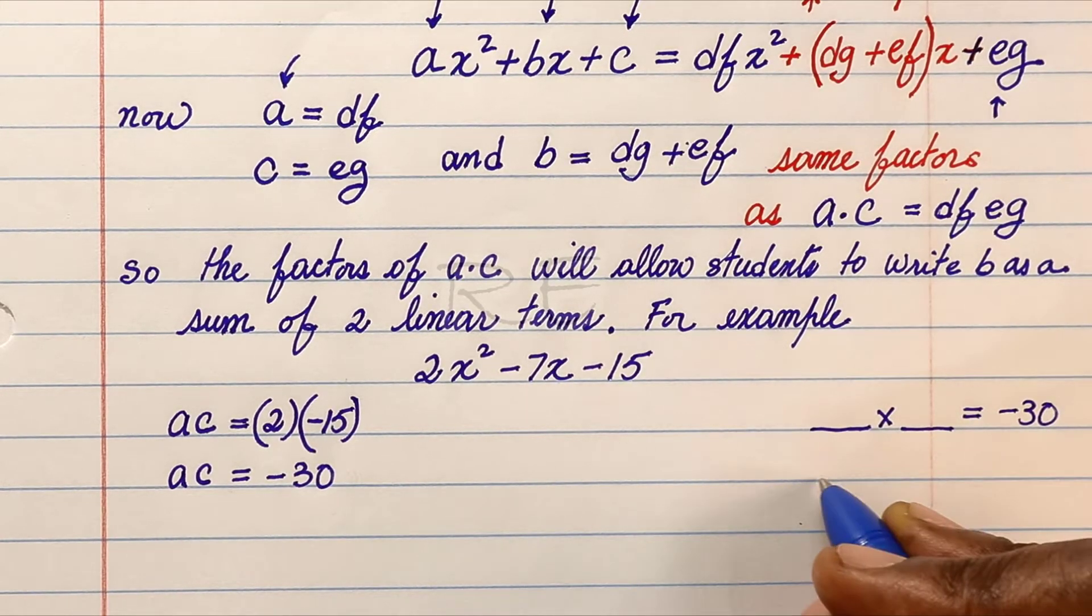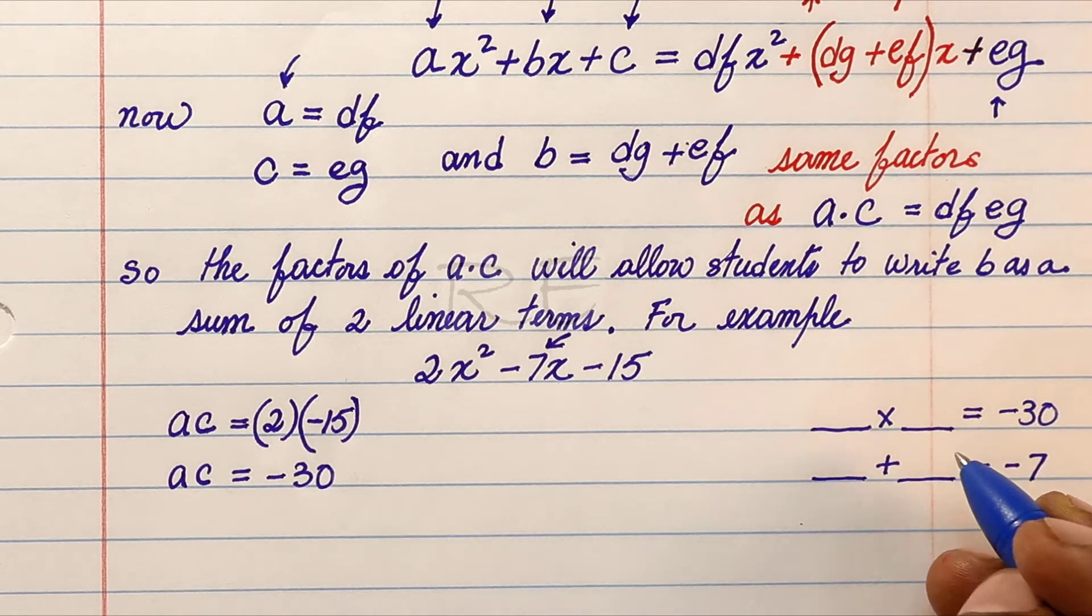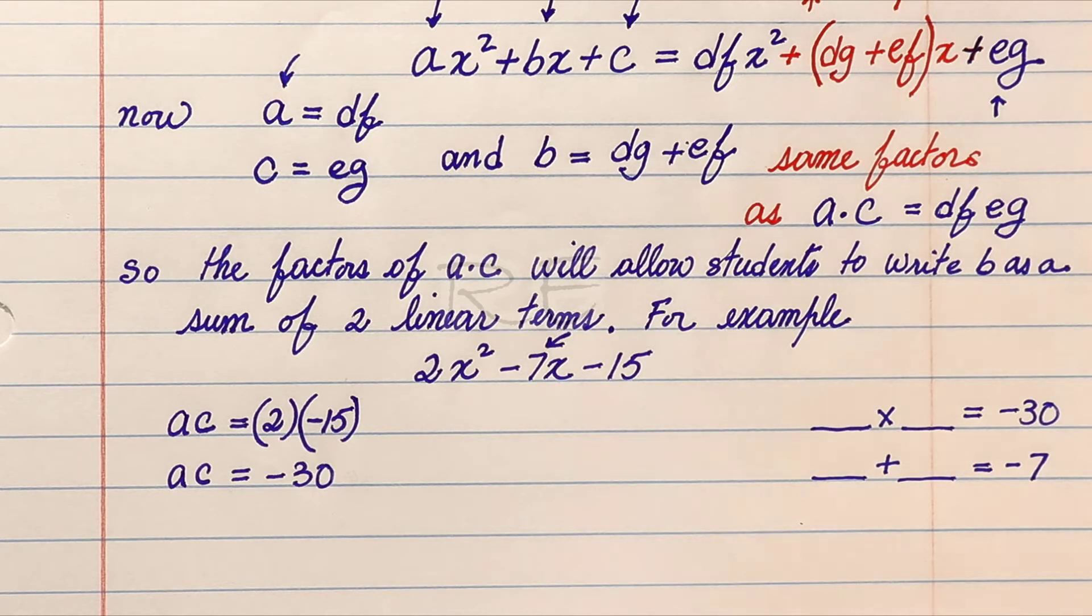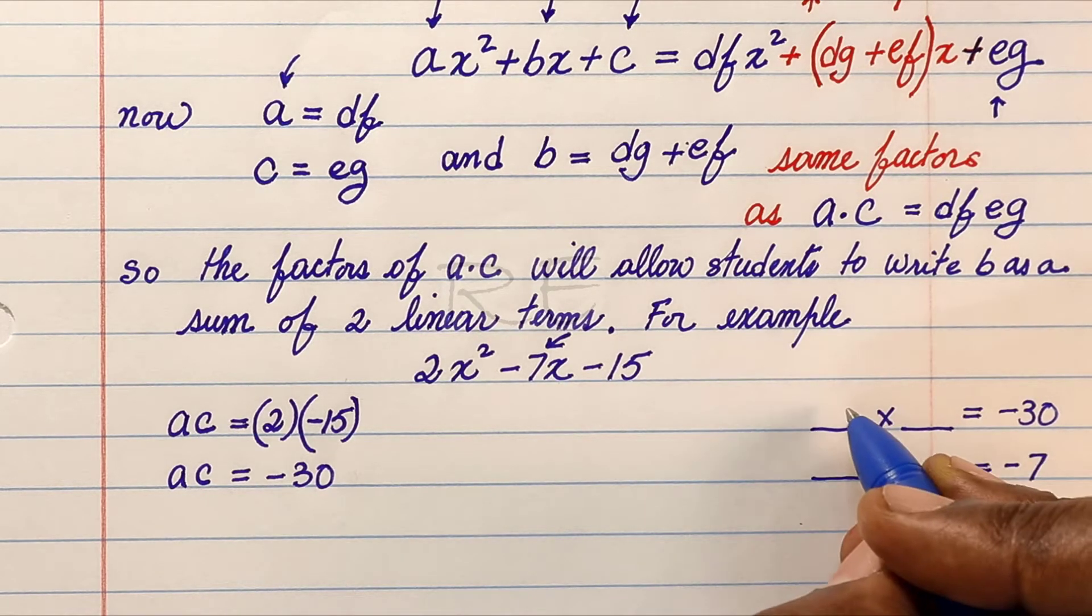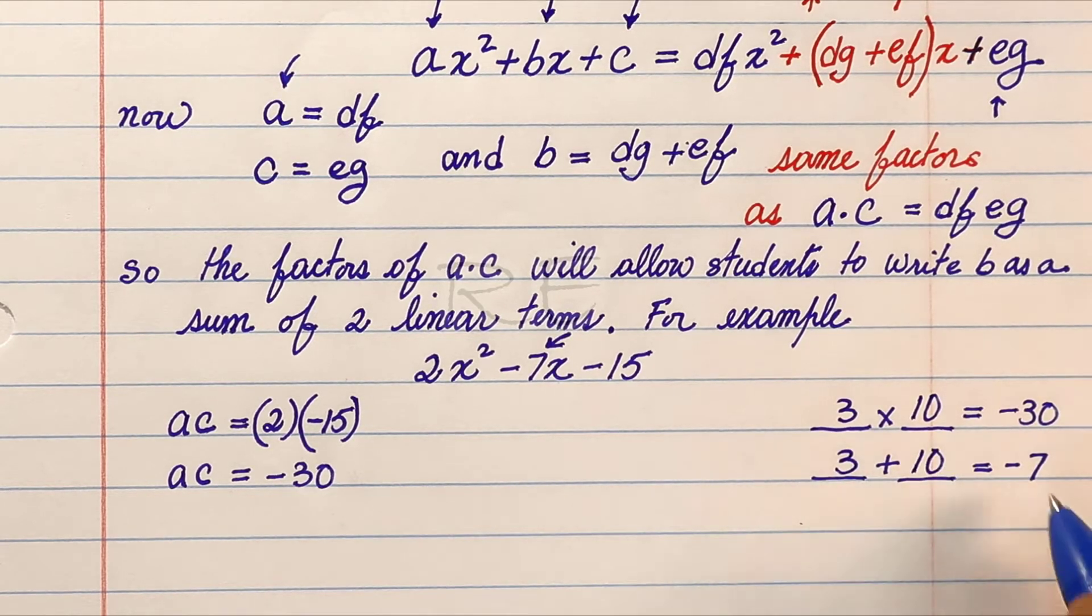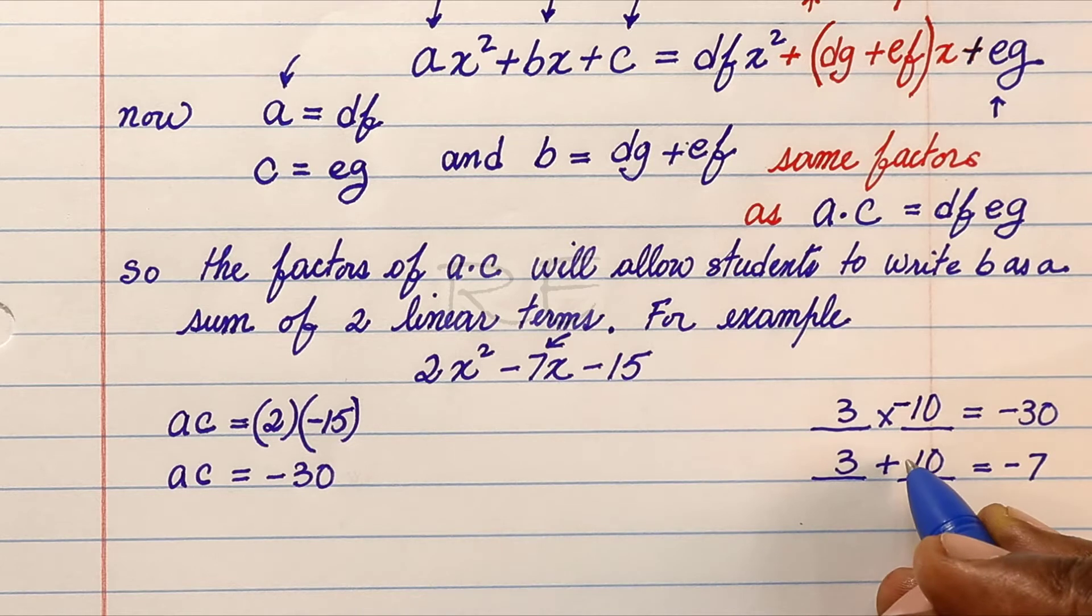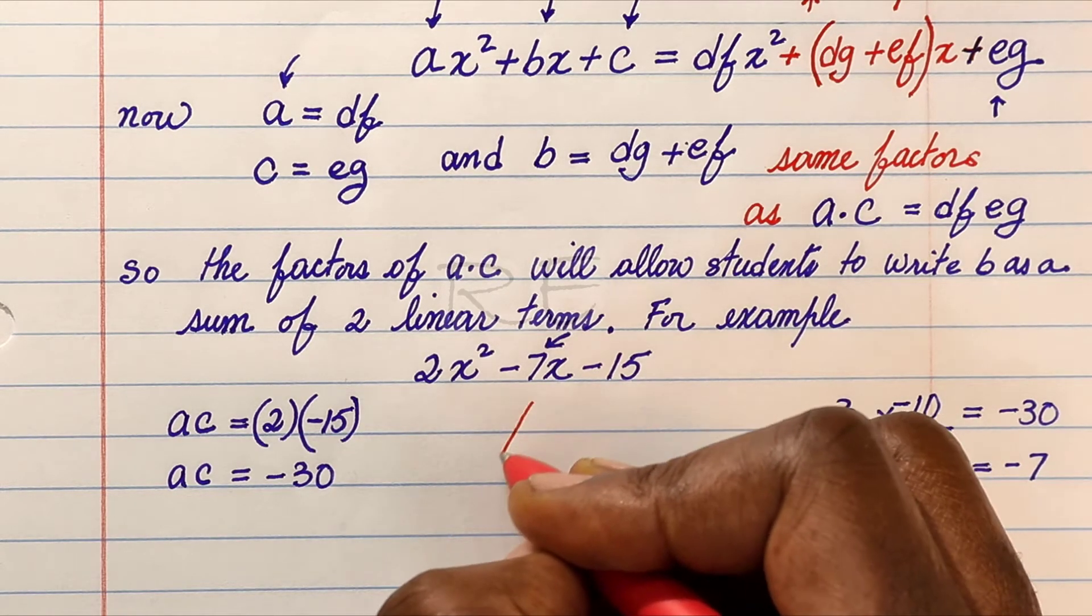Now, negative 30 should give us the factors that we want. The product is negative 30. Therefore, we're going to try 3 and 10 and play with the sign in order to get a sum of negative 7. 3 times negative 10 equals negative 30, and 3 plus negative 10 equals negative 7.